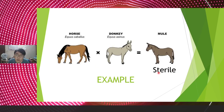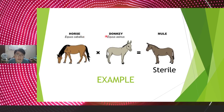From the biological species definition, a mule cannot be considered a species, and horse and donkey are totally different species.